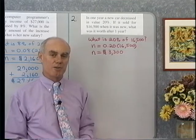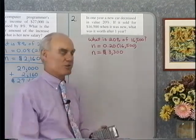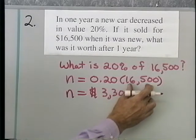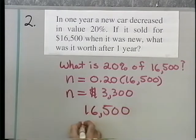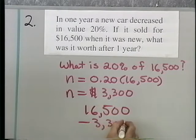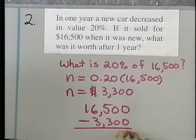Now what we want to do is find the value of the car after one year, so I'll subtract this 3,300 from 16,500. So 16,500 minus 3,300, I end up with